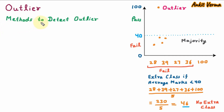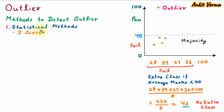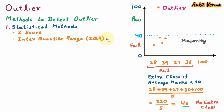Now we are learning methods to detect outlier. The first method is statistical methods. The first is Z-score — it calculates the standard deviation and identifies outlier. Next is interquartile range, also called IQR — it identifies outliers which are outside a range. This range is calculated using quartiles.